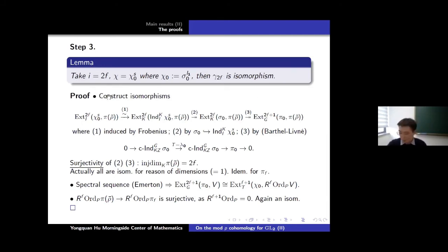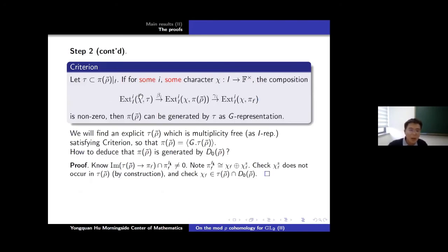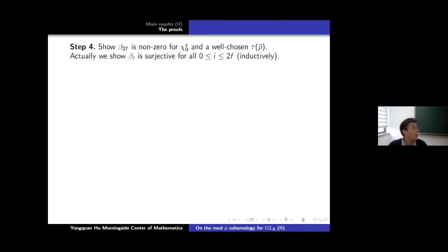The spectral sequence implies Ext^{2f+1} of (π_0, π_f) ≅ Ext^{f+1} of (χ_0^s, R^f Ord_p(π_f)), since R^{f+1} Ord_p vanishes and also Ext^{f+2} for the torus T vanishes. We are reduced to showing the morphism from R^f Ord_p(π(ρ̄)) to R^f Ord_p(π_f) is an isomorphism — this is trivially surjective since R^{f+1} Ord_p is always zero. By dimension reasons, both are equal to dimension one, so the morphism γ_{2f} is the isomorphism.